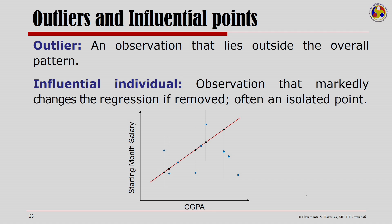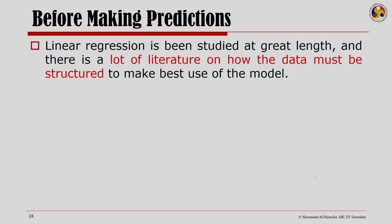Other important considerations in linear regression are outliers and influential points. An outlier is an observation that lies outside the overall pattern of the data. An influential individual is an observation that could markedly change the regression if removed — often an isolated point. How one makes predictions using such regression models will be our focus in the next couple of slides.